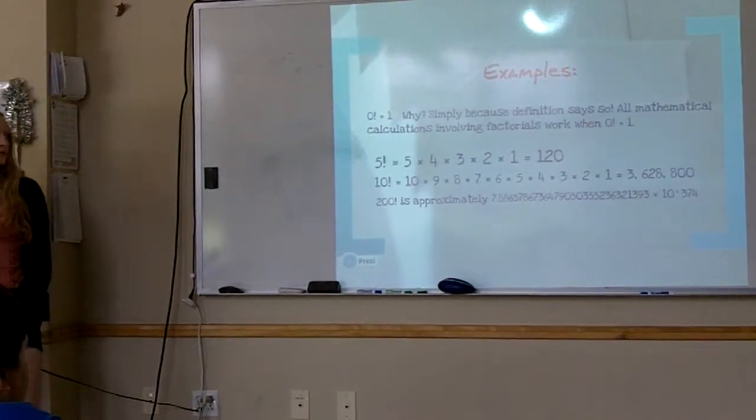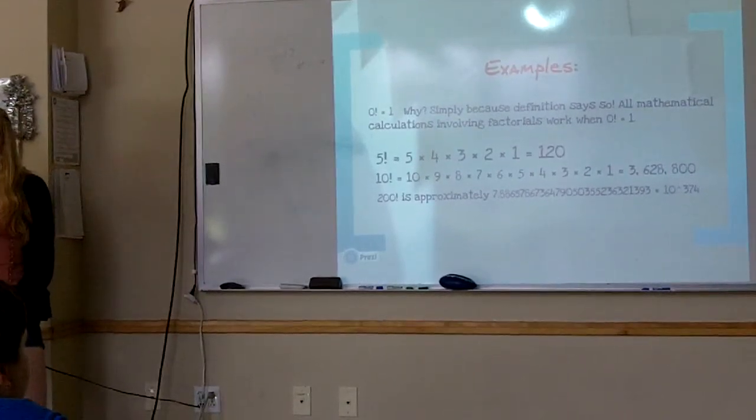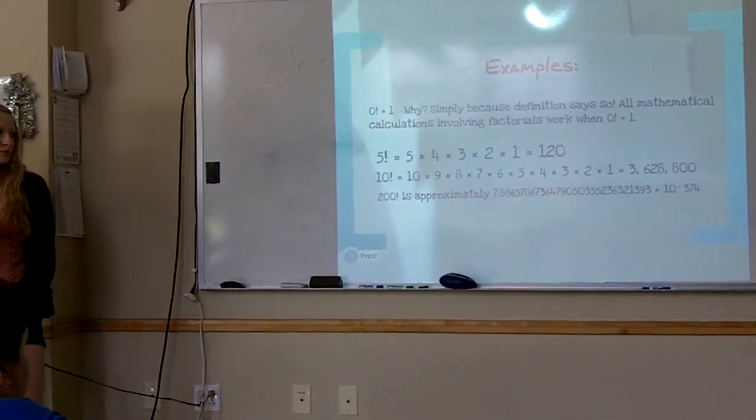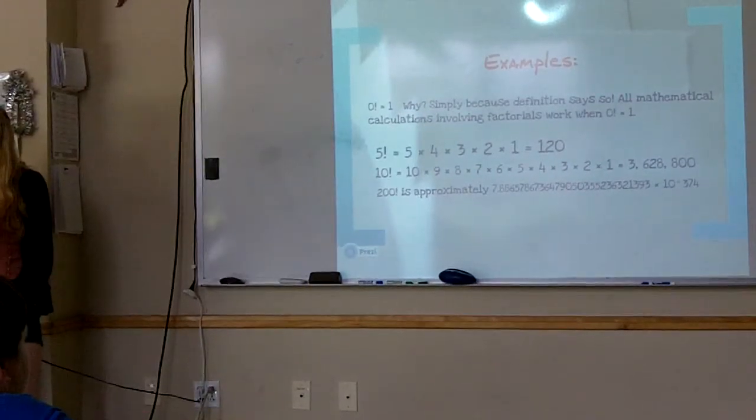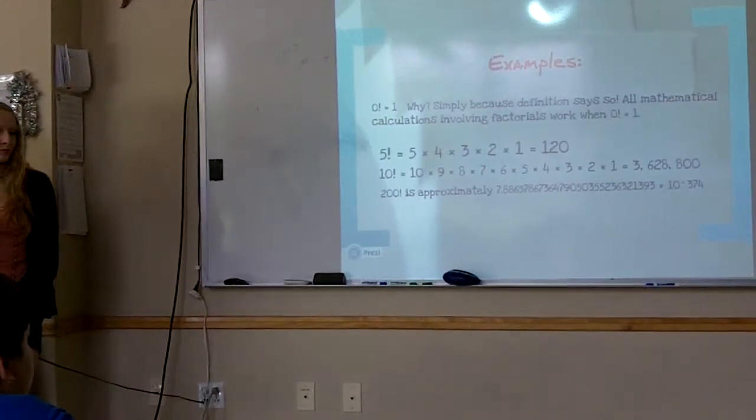Examples of factorials: 5 factorial equals 5 times 4 times 3 times 2 times 1, although the 1 is pretty much irrelevant. 10 works the same way. They get really big really easily, so 200 factorial is approximately 7.89 times 10 to the 374th.